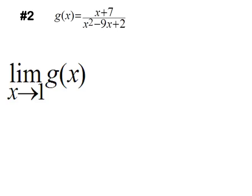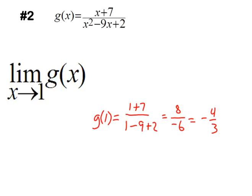So here's g of x. Can we use substitution? Not sure. So let's try g of 1. When we plug 1 in, we get 1 plus 7, 1 squared minus 9 times 1 plus 2. We get 8 over negative 8 plus 2. We get negative 4 thirds. Is that an answer? Yes. Did we do anything illegally mathematically? No. So negative 4 thirds would be our limit using substitution.